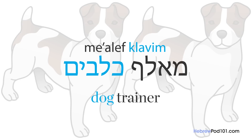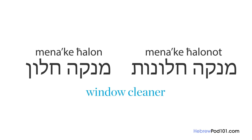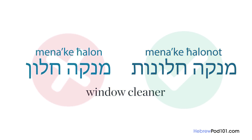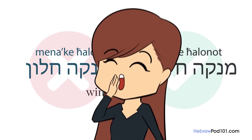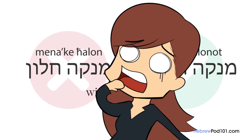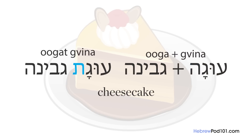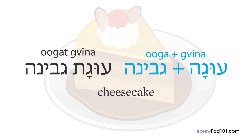This is to indicate that the trainer trains more than one specific dog. Similarly, a window cleaner will be 'menakei halonot,' not 'menakei halon.' Now it starts to get complicated: if the main noun is feminine, singular, and ends with the letter 'hay,' then the 'hay' becomes 'taf.' Like in the compound cheesecake: 'uga' plus 'gvina' becomes 'ugat gvina.'